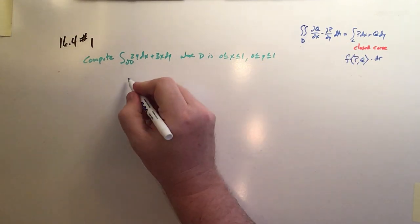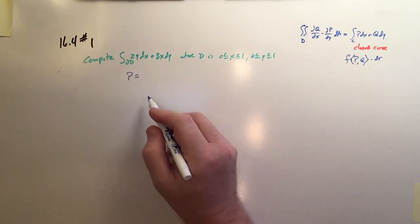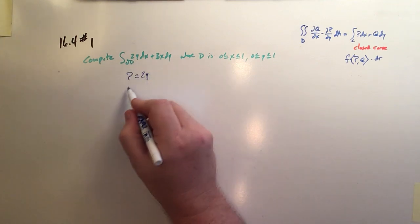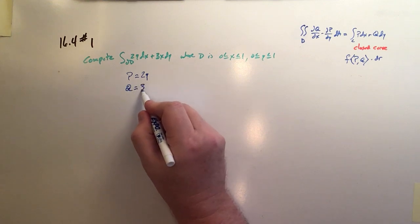So to do that, we have to identify the functions p and q. p is 2y, and q is 3x.